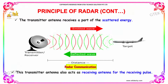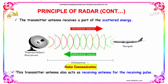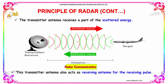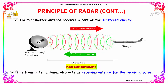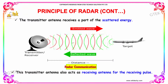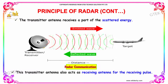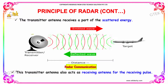The transmitter antenna receives a part of the scattered energy. There is the emitted wave and there is the deflected wave — that's reflection — which gives the distance between the source and the destination. This transmitter antenna also acts as a receiving antenna for the receiving pulse.